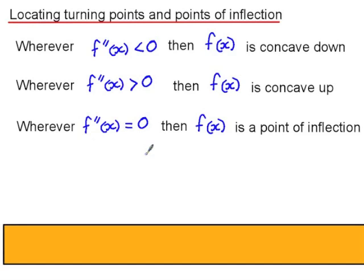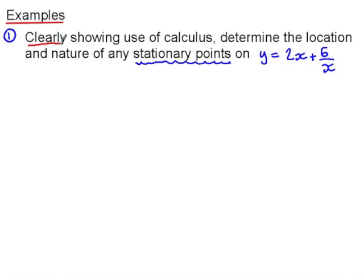In this lesson we're going to use our knowledge of first and second derivatives to locate turning points and points of inflection of functions. When the second derivative is negative, the function is concave down. When the second derivative is positive, the function is concave up. And when the second derivative is equal to zero, we have a point of inflection. We're going to use this knowledge to locate stationary points, clearly showing use of calculus. We differentiate the function, writing it as y equals 2x plus 6x to the negative 1. A stationary point is any point on the function where the gradient is equal to zero.